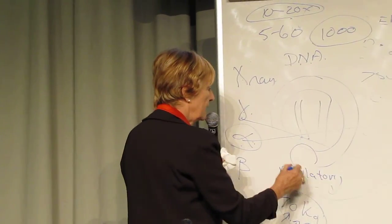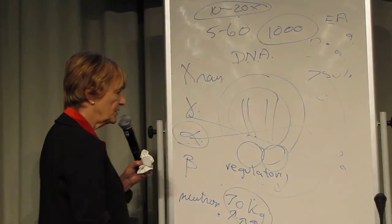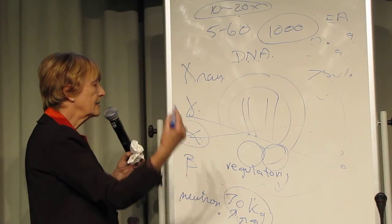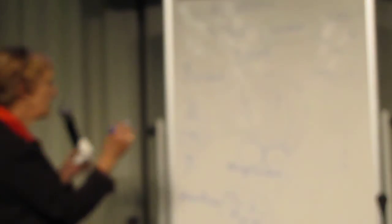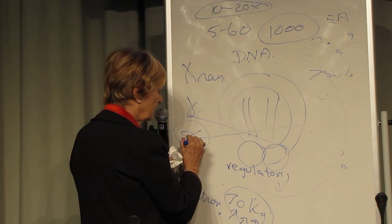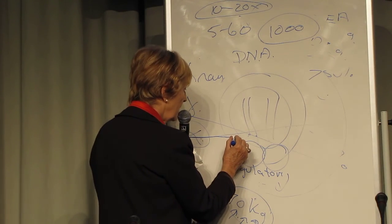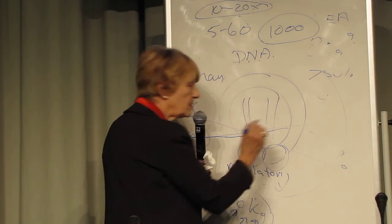One day instead of the cell dividing in a regulated way by mitosis, it produces millions and trillions of cells and that is a cancer. It takes a single alpha particle to hit a single gene in a single cell to kill you.